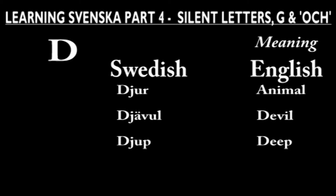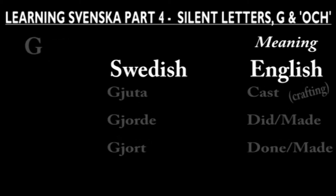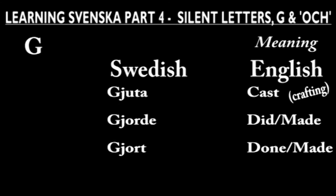Also note that all vowels in these particular words are long since no double consonants are present. Some examples of a silent G are: gjuta, gjorde, gjort.